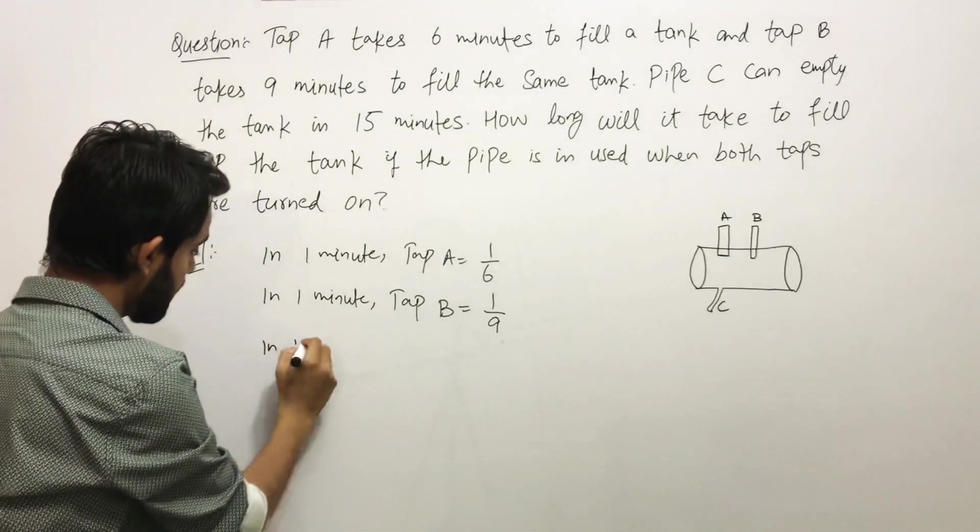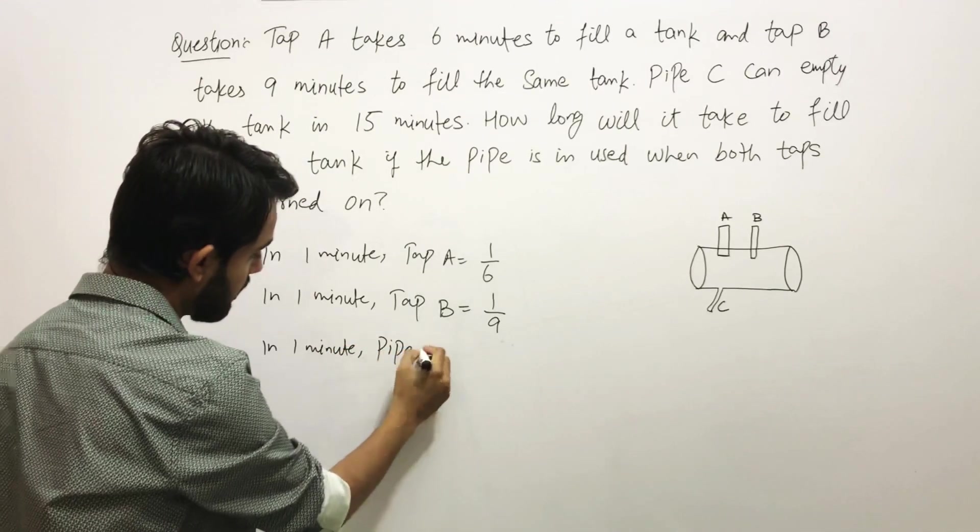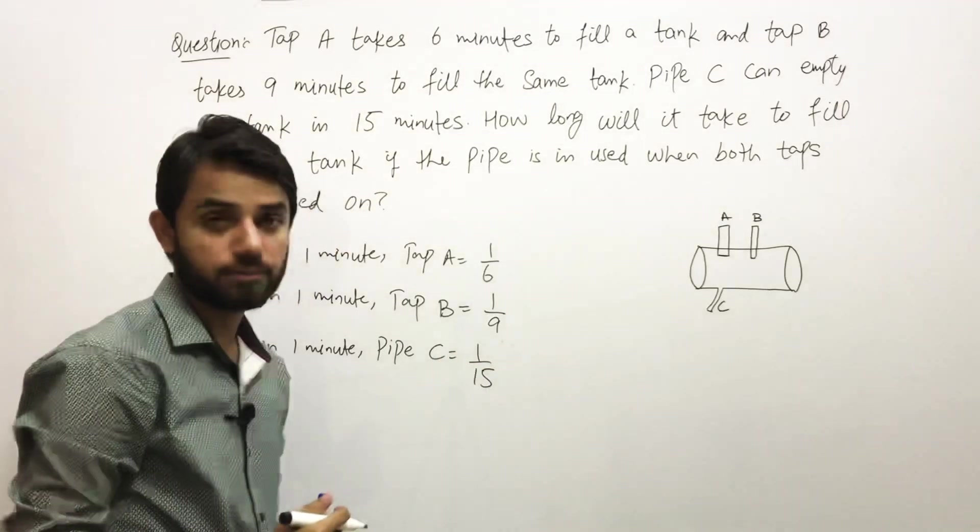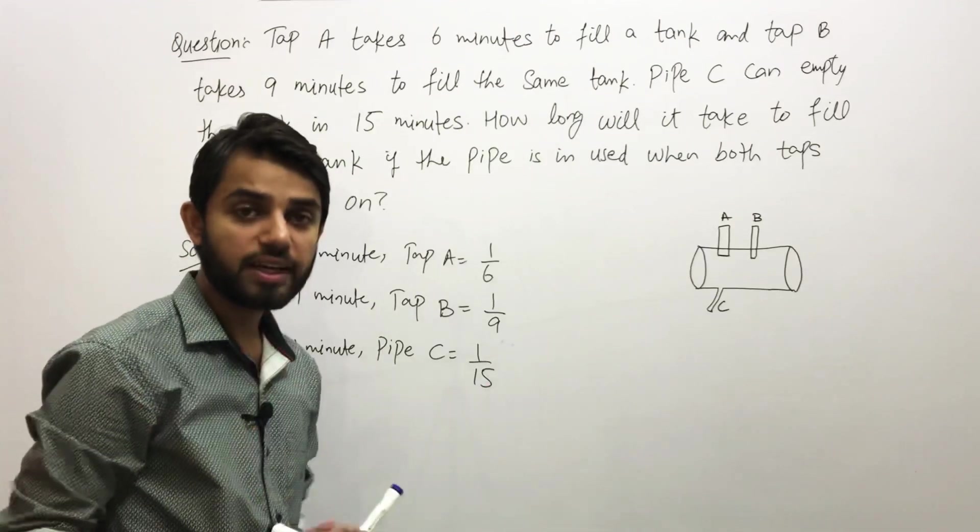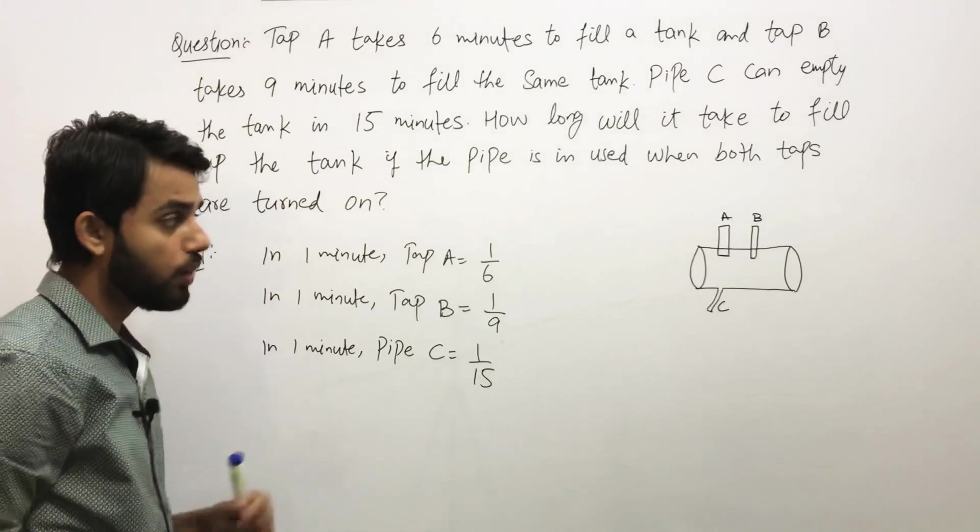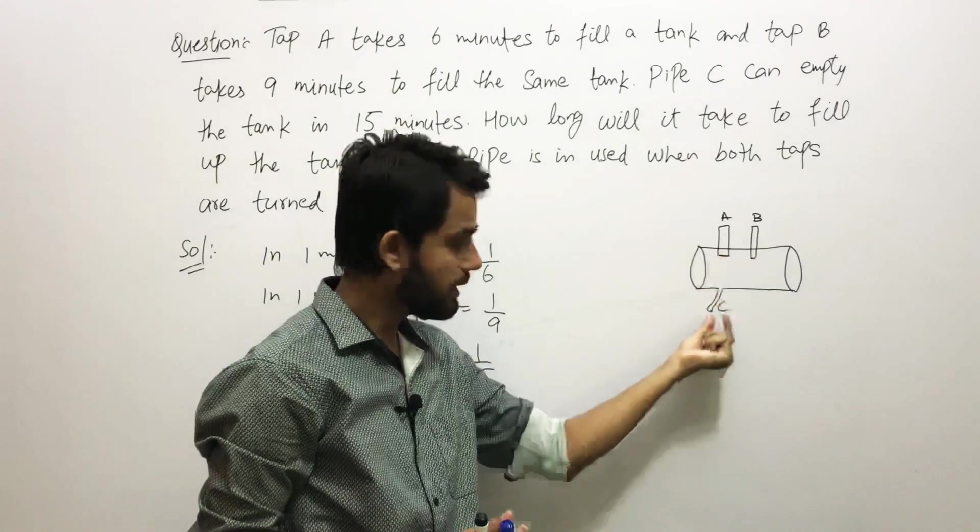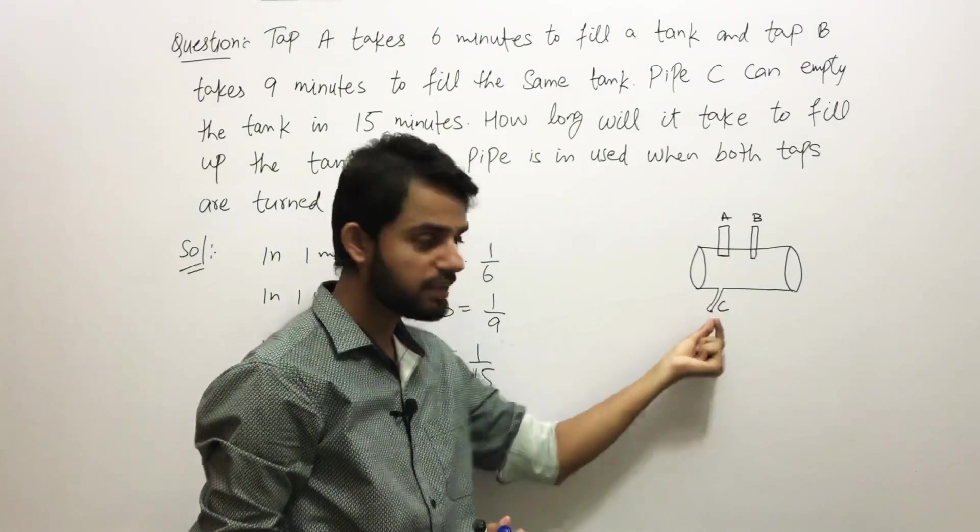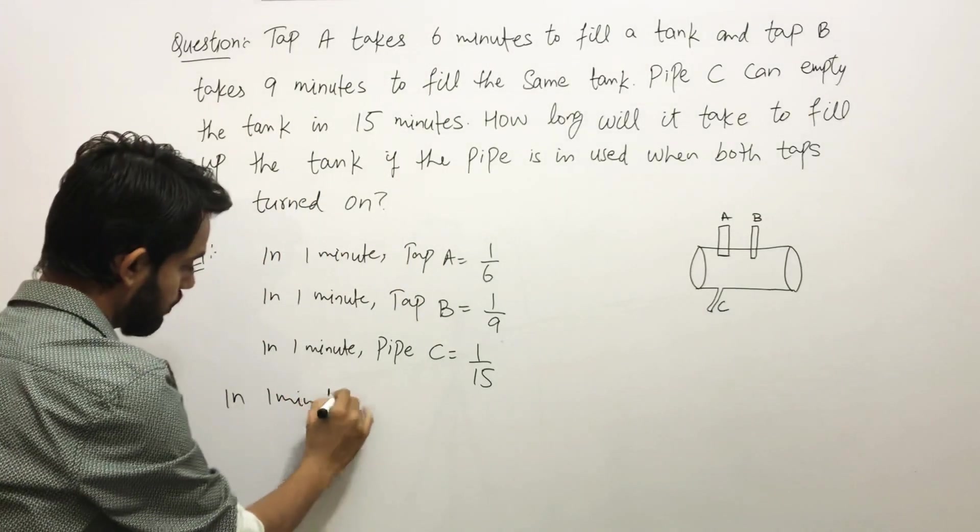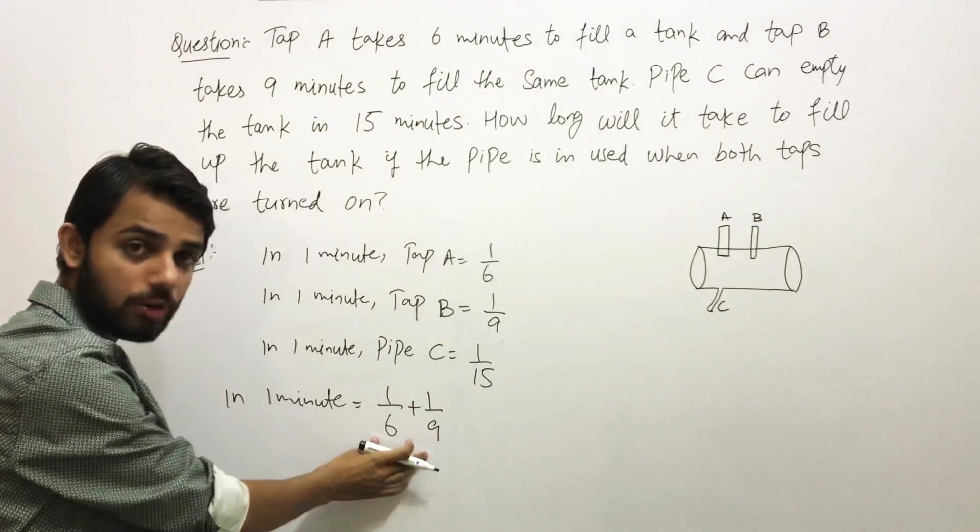In 1 minute, Tap A alone will fill 1/6 of the tank, and in 1 minute Tap B alone will fill 1/9 of the tank. While in 1 minute, for Pipe C it will empty 1/15 of the tank. Since both the water taps are open, we are going to add them, and since this is open, we will minus this.